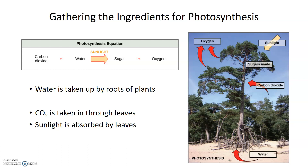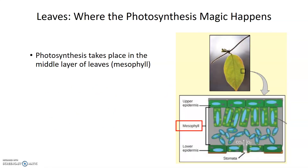While water is obviously necessary for photosynthesis — and therefore the roots of the plants are important — when we really talk about where the photosynthesis magic happens, we're focusing more on the leaves. Photosynthesis takes place in the leaves, in particular in a middle layer known as the mesophyll.